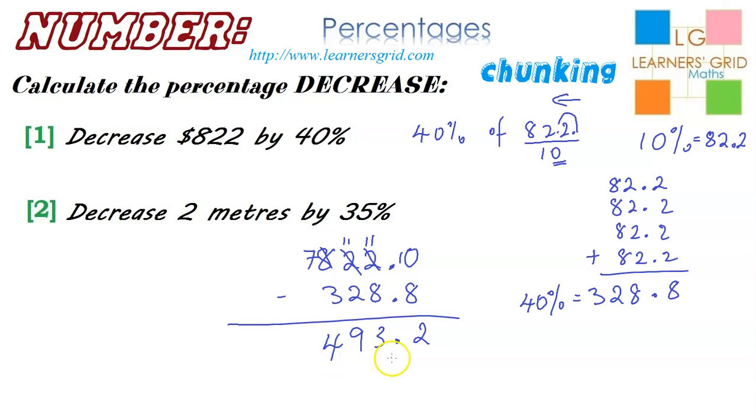So, 493. This is going to be dollars. It's money, so we need two decimal places in the cents part of the amount. So, this needs to be a zero. And decrease $822 by 40%, and you're going to end up with $493.20. That's how you can answer number one.